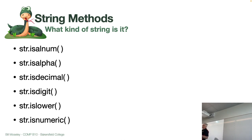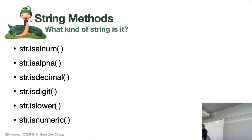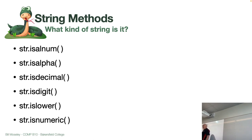The difference between a function and a method is that a method is essentially a function that belongs to an object or an object type. In this case, these are string methods, so they belong to a string. You can see it's a method of an object because of the notation: the string object — whatever the variable is — dot, and then the name of the method. All of these methods start with the word 'is'.